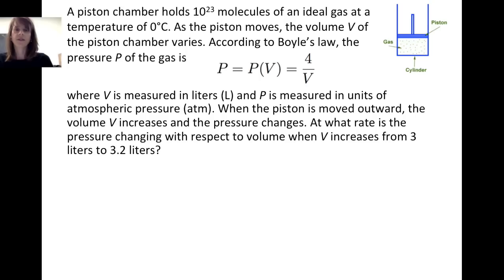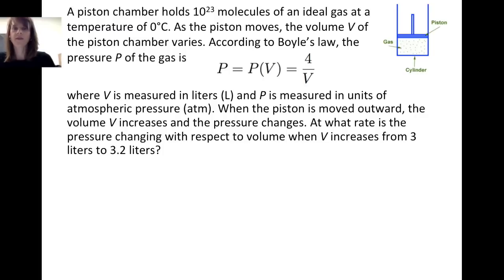Let's consider the following scenario. Suppose we have a piston chamber that holds 10²³ molecules of an ideal gas at a temperature of 0 degrees Celsius. As the piston moves, the volume v of the piston chamber varies. According to Boyle's law, the pressure p of the gas is given by p(v) = 4 / v, where volume is measured in liters and pressure is measured in units of atmospheric pressure, denoted ATM.